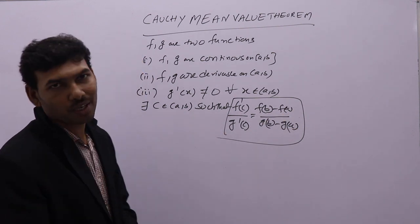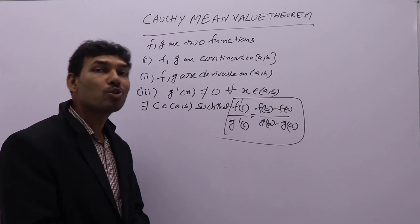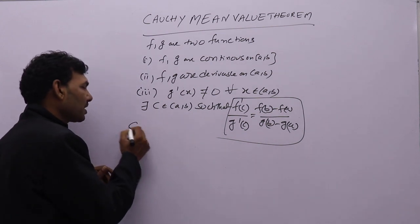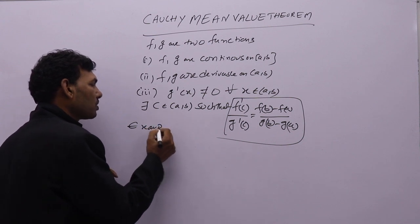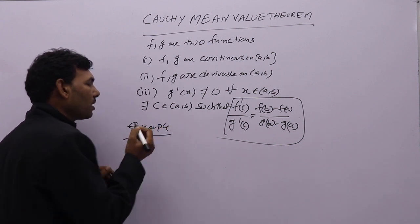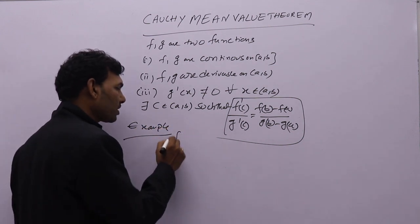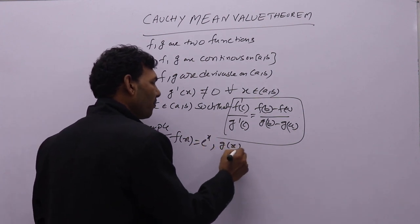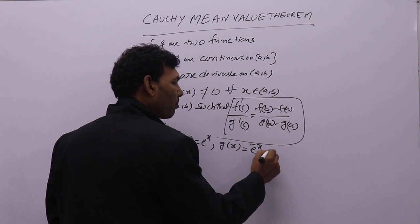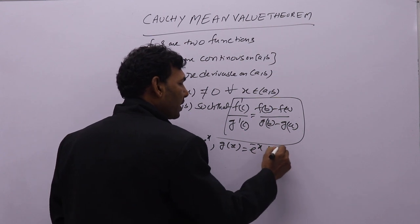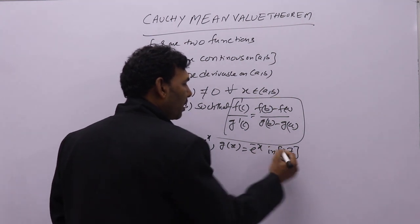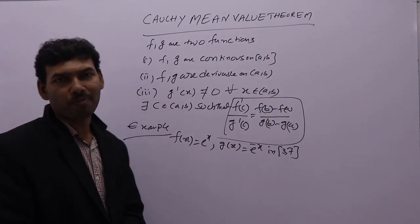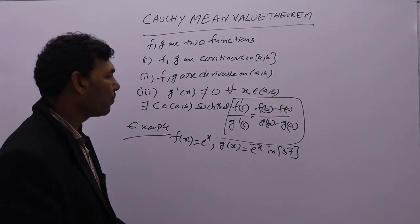Cauchy mean value theorem is applied on two functions. Now we will discuss one application, one example. Apply Cauchy mean value theorem for f(x) equal to e power x and g(x) equal to e power minus x in closed interval [3, 7]. Check whether Cauchy mean value theorem can be applied on these two functions or not.